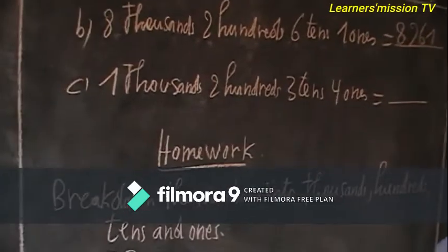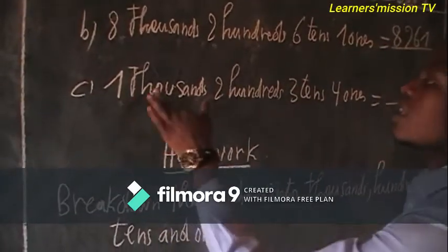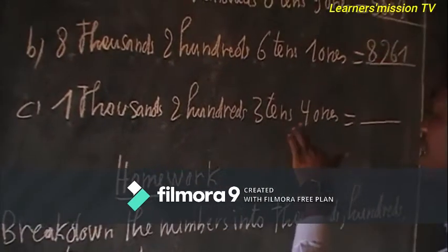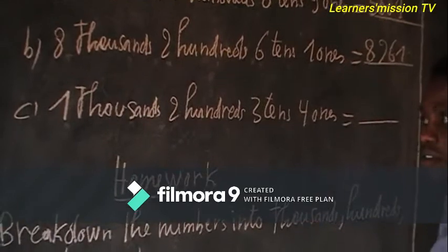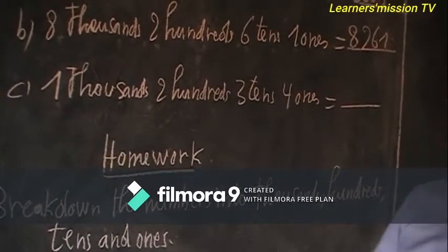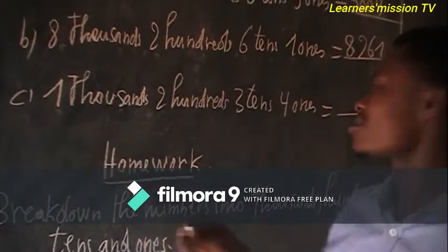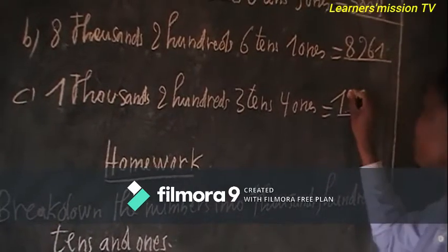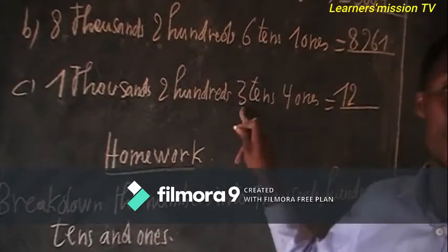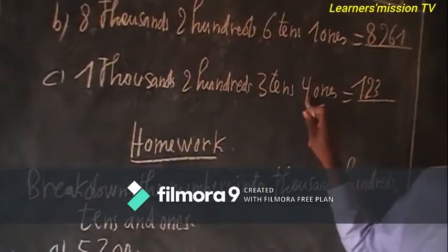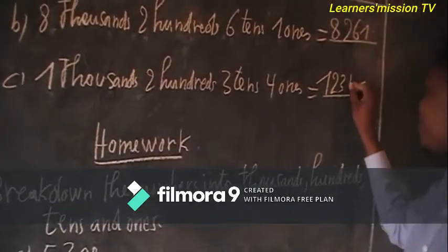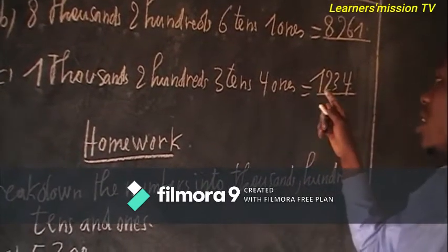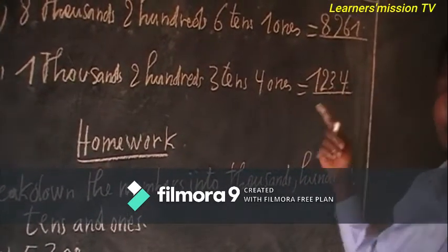Then number C: we are having one thousand, two hundred, sixty-three ten, and four ones. You are going to write the number here. The number is one, two, three, then four. So the number is one thousand, two hundred thirty, thirty-four.